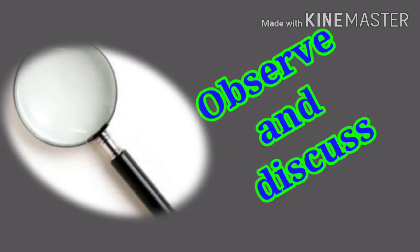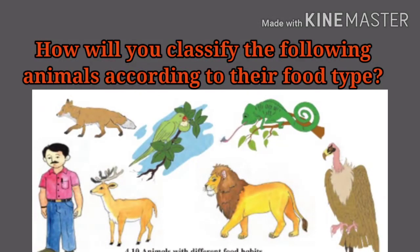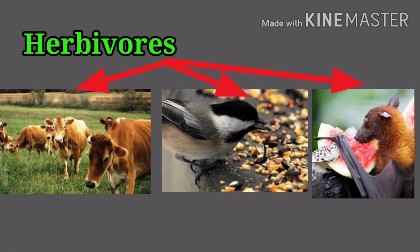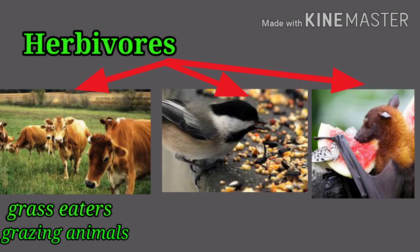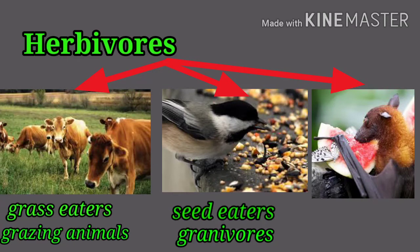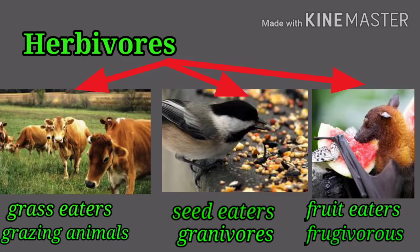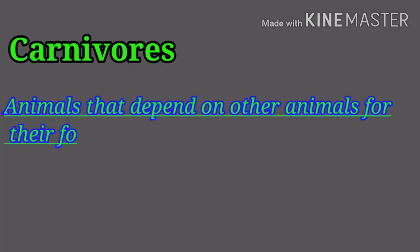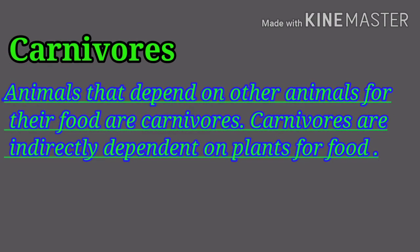Observe and discuss: how will you classify the following animals according to their food type? According to the type of food, animals can be classified as herbivores — which use plants directly as their food. Examples include grazing animals, granivores which feed on seeds, and frugivores which eat fruits. Carnivores are animals that depend on other animals for their food, and are therefore indirectly dependent on plants.